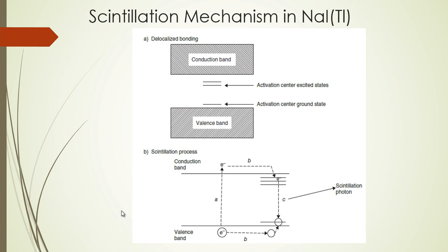Most of the excitations caused by this electron result in energy being passed to other electrons, which then lose that energy as heat. However, some electrons gain enough energy to be raised into the conduction band, jumping from the valence band. Once in the conduction band, they would want to return to the valence band since it is lower energy, but this direct transition is quantum mechanically forbidden.